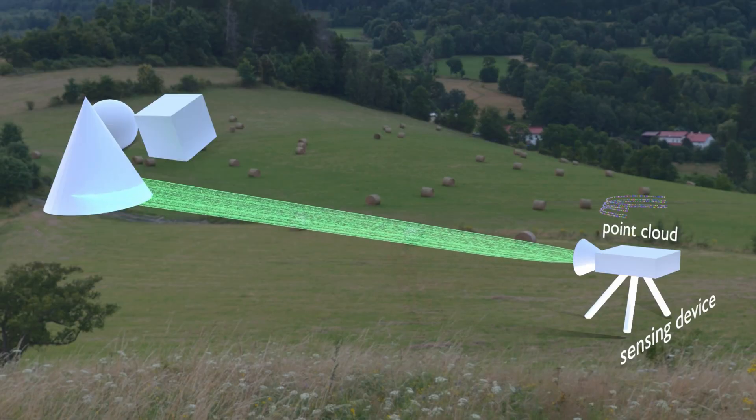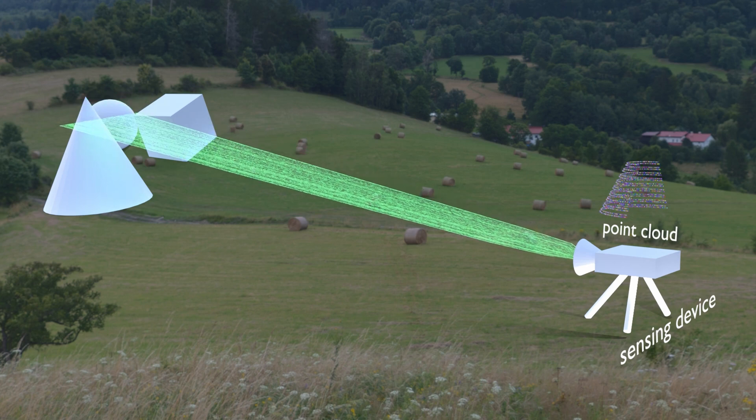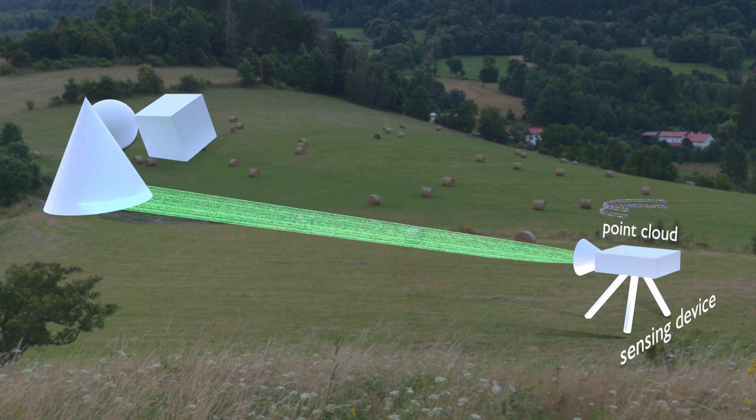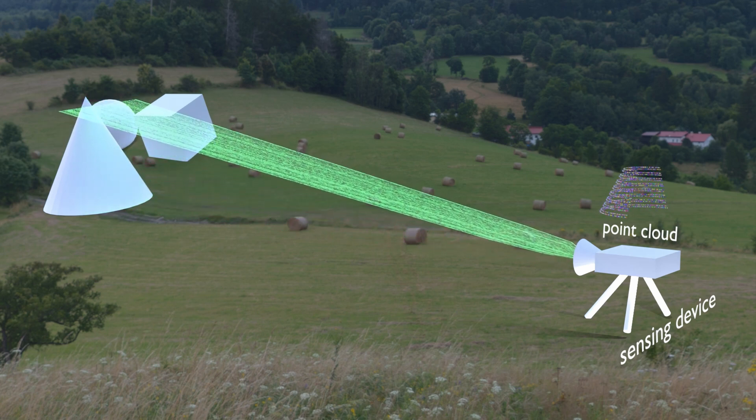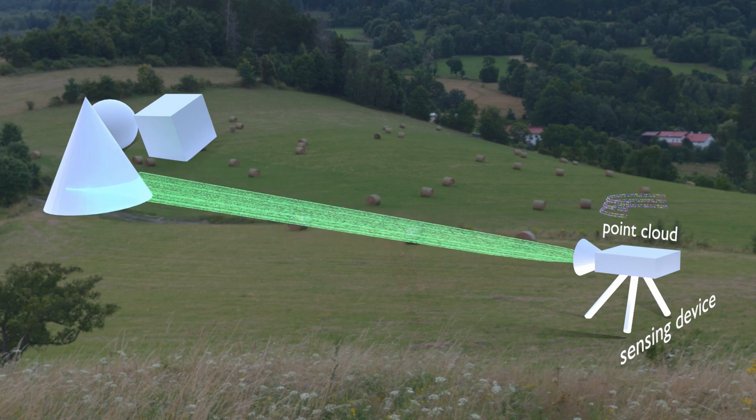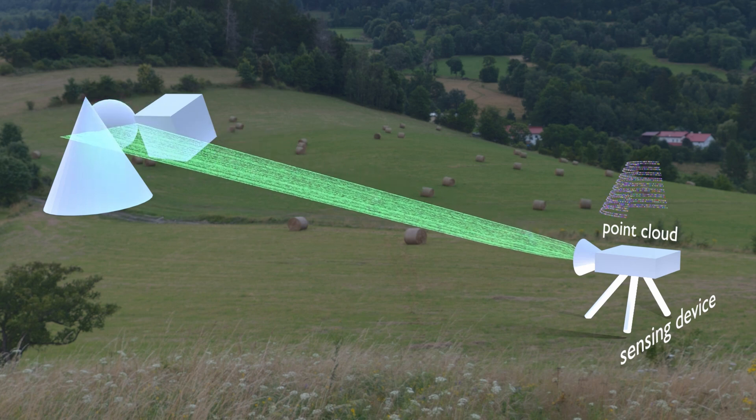Point clouds are captured by sensing devices or 3D perception systems. These devices scan multiple points on visible objects in the world and store meaningful representations of the 3D structure and shape of these target objects in the point cloud data format.